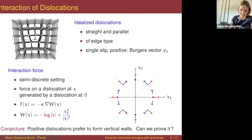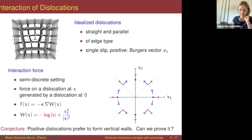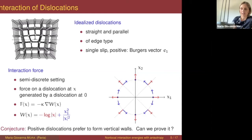There is a mechanical conjecture saying that under these assumptions, the dislocations at equilibrium should arrange themselves to form vertical alignments, called the vertical walls of these locations. We can get an idea of why this should be true by looking at the expression of this force. The force, up to a positive constant depending on the material, is given by minus the gradient of the kernel, with two components: one from the gradient of the logarithm and one from the gradient of the anisotropy.